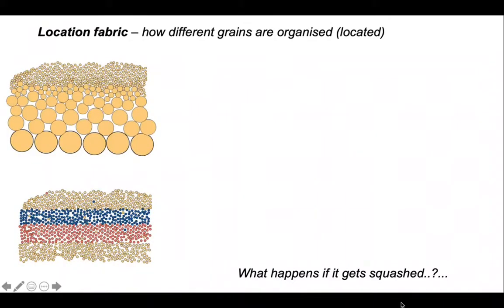Let's start with something called location fabric, and this is how different grains are organized or located in a rock. Later we'll look and see what happens if it gets squashed.